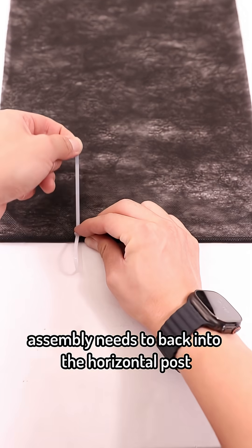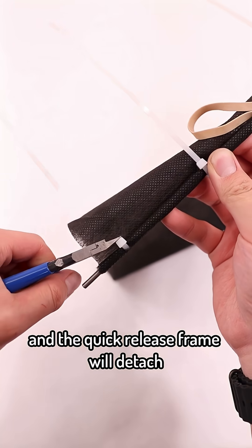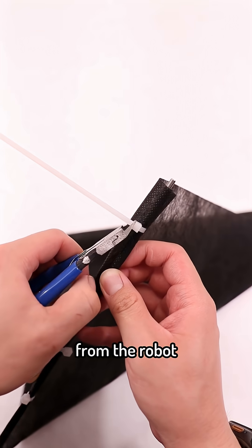The robot assembly needs to back into the horizontal post, and the quick-release frame will detach the rubber band from the robot onto the flag post.